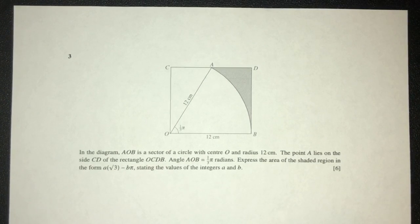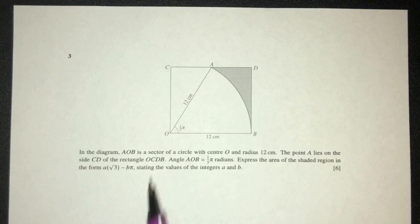Let's move on to the next question. So in this diagram, we have OAB is a sector of a circle, center O, with radius 12. 12 and 12, they are the radius.